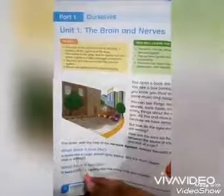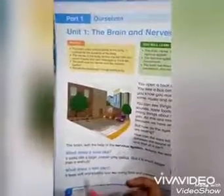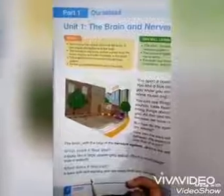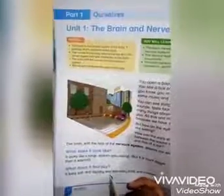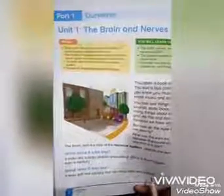Now, what does the brain look like? دماغ دیکھتا کیسا ہے؟ It looks like a large pinkish-gray walnut — مطلب اکھروٹ کی طرح — but it is much bigger than a walnut. یہ محسوس کیسا ہوتا ہے؟ It feels soft and squishy — نرم اور مسامدار — and has many folds, creases, and lines.